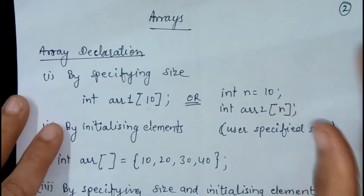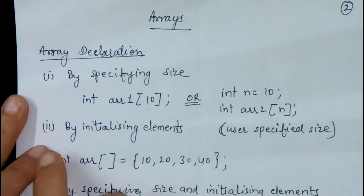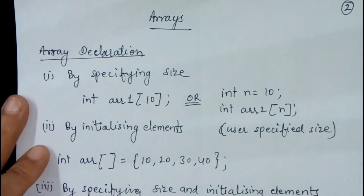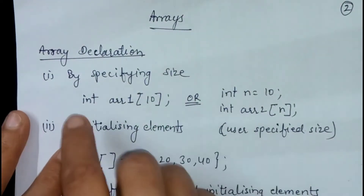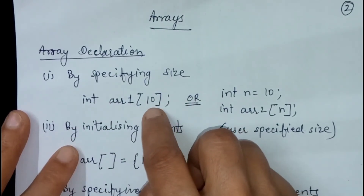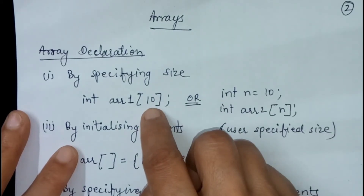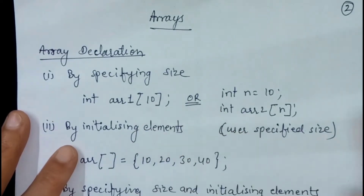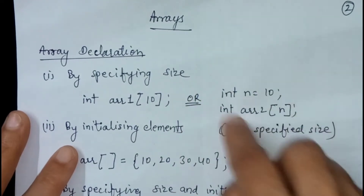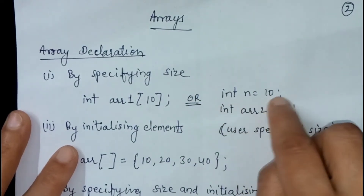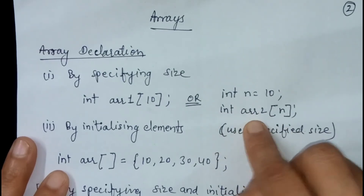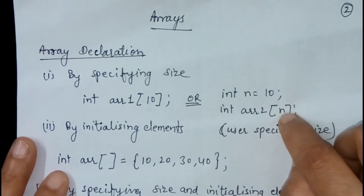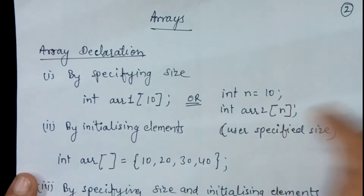We can declare an array in three ways: in the first way, by specifying the size; in the second way, by initializing the elements; and in the third way, by specifying the size and initializing the elements. In the first case, we mention the size of the array in square brackets — data type, array name, and size. Or in place of the size, we can use a variable initialized earlier. For example, n is an integer variable initialized to 10, and array2 is an integer array with dimension 10 because n equals 10.